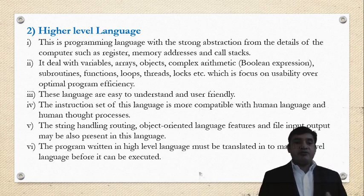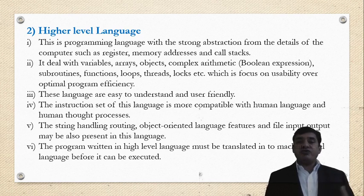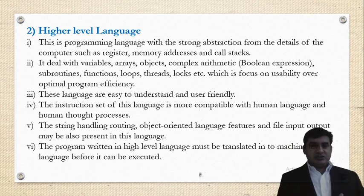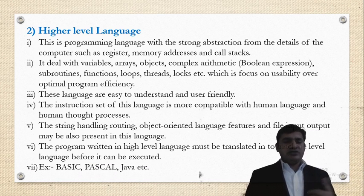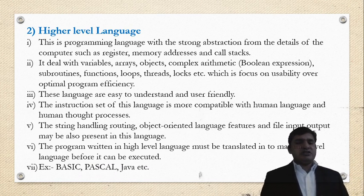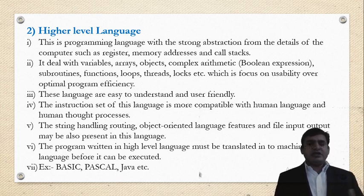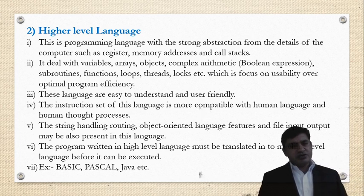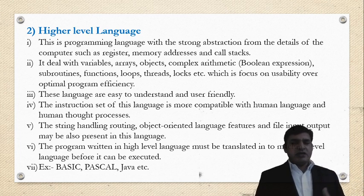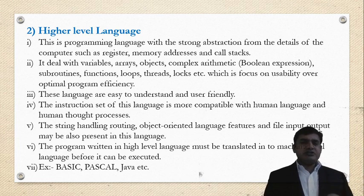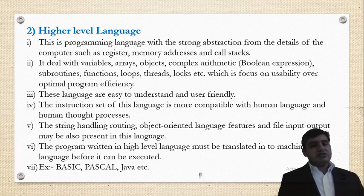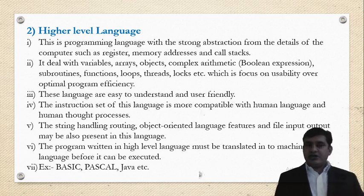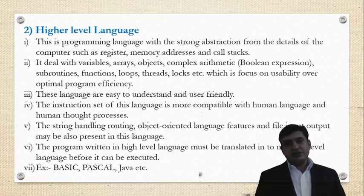So higher level language is converted or translated into machine level language before it is executed — it is in coded form before execution. Examples of higher level language are BASIC, Pascal, and Java.